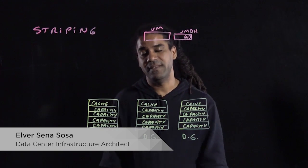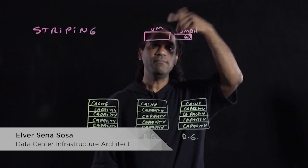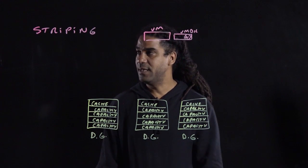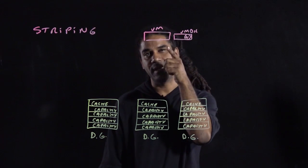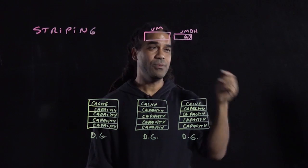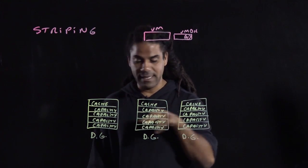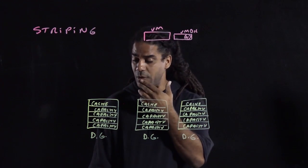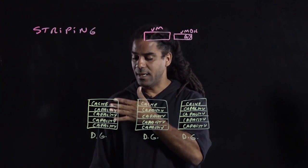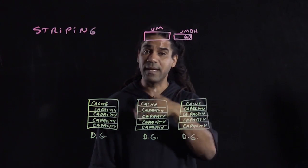It's rather a simple concept how this handles striping. You have a VM with its VMDK object, and the application running on that VM requires performance, an IO throughput performance which is larger than your capacity disk can handle. Or you want to guarantee the performance by making that VMDK use disk from different capacity disks.